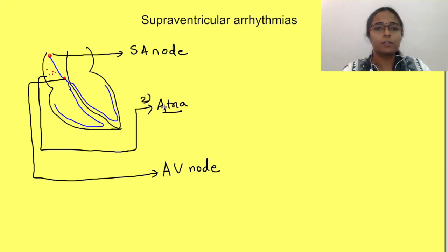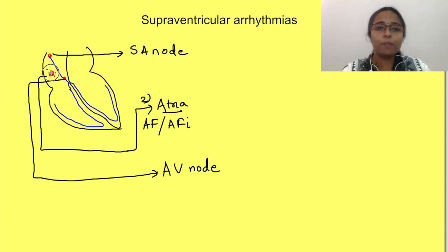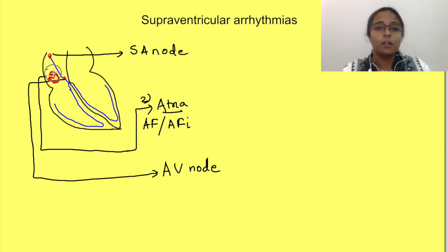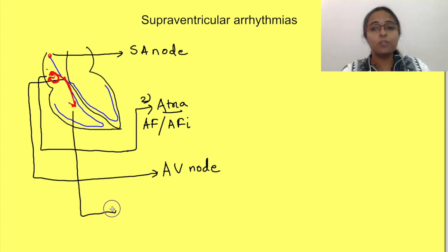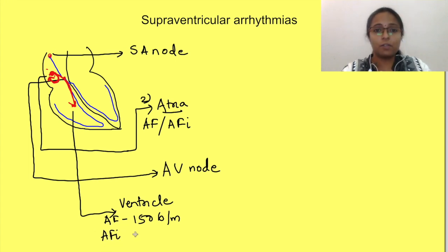The second cause is atrial — either atrial flutter or fibrillation. These occur due to an ectopic focus in the atria that generates an impulse which finds a re-entry path within the atria itself, keeping it moving in a circle and causing tachyarrhythmias. Some of these impulses reach the ventricles, increasing the ventricular rate. In atrial flutter, the atrial rate is 240 to 300 beats per minute and ventricular rate may be about 150 beats per minute, while in atrial fibrillation the ventricular rate may be as high as 200 beats per minute.